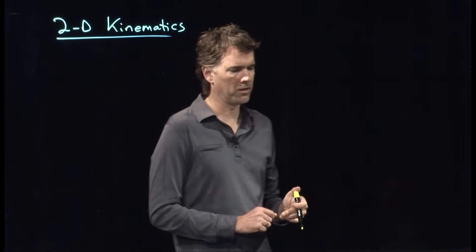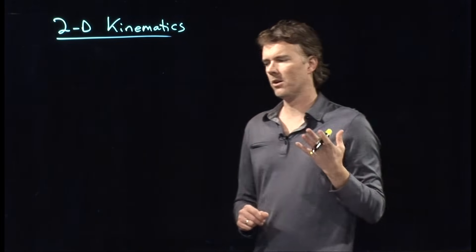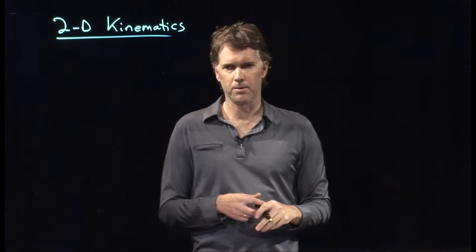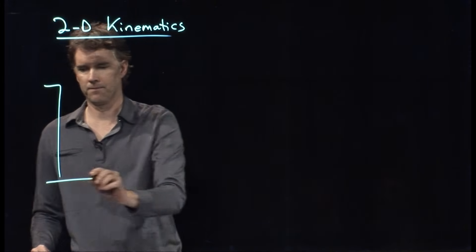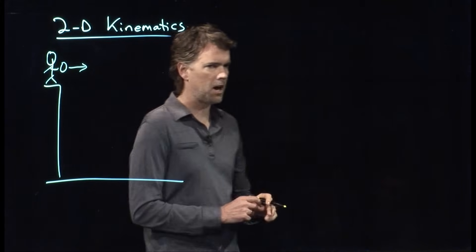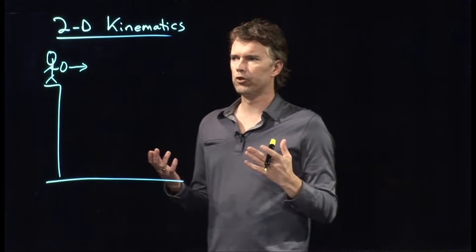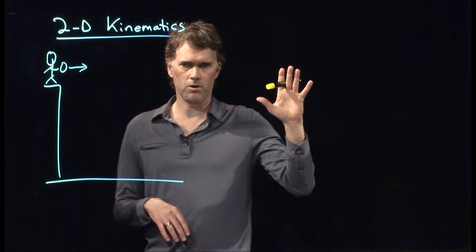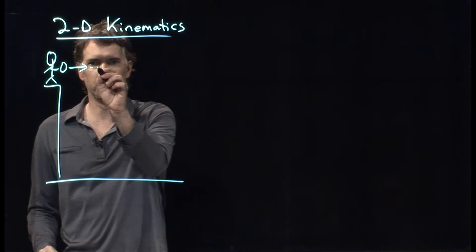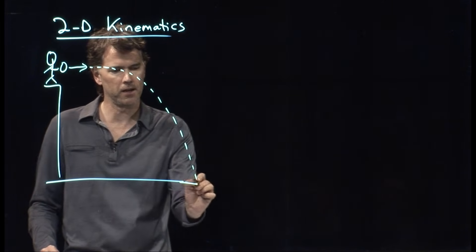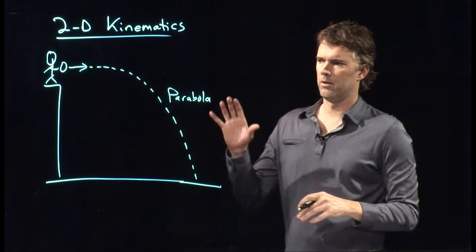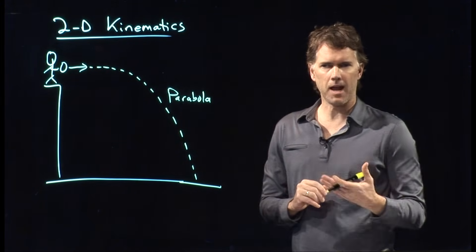Let's approach this with the following thought experiment. Let's say we go to the top of the Empire State Building, take an object — say a marble — and throw it off the top horizontally. You should never actually do this; I'm sure you'd get in big trouble. But if I launch this object horizontally, what sort of trajectory does it take? Anybody know what that trajectory is called? A parabola — it sort of curves down like so, and that is, of course, a parabola.